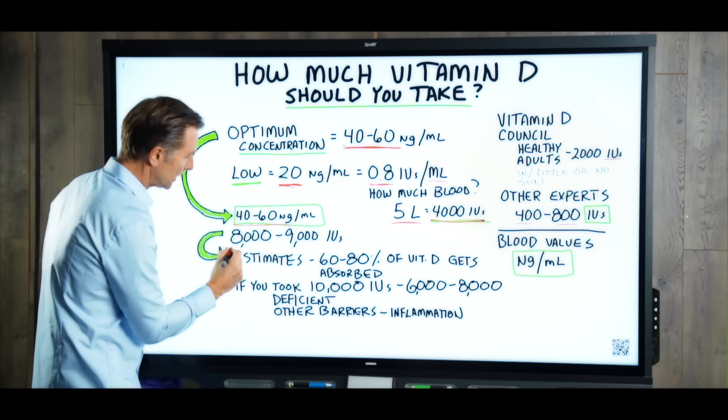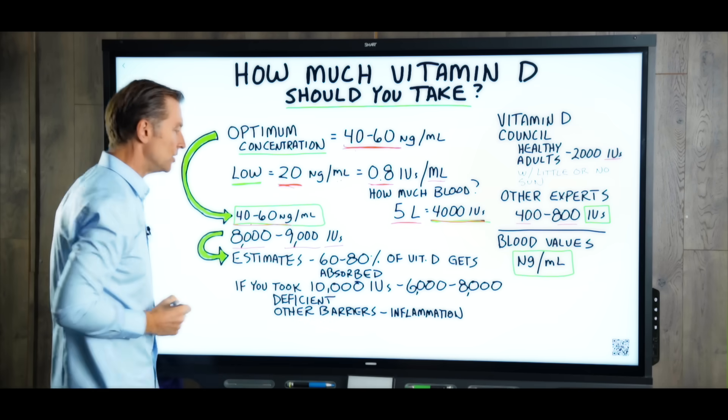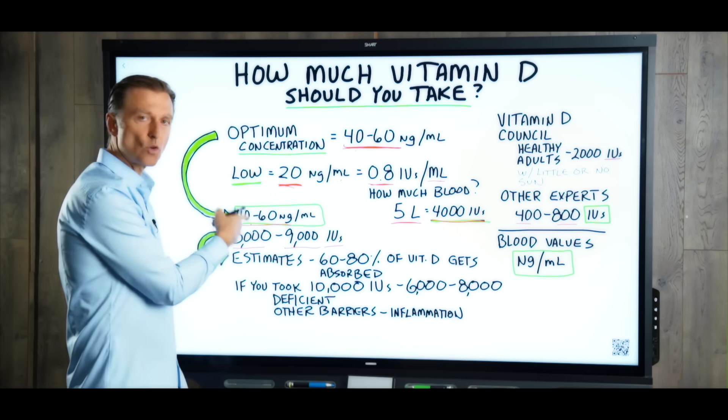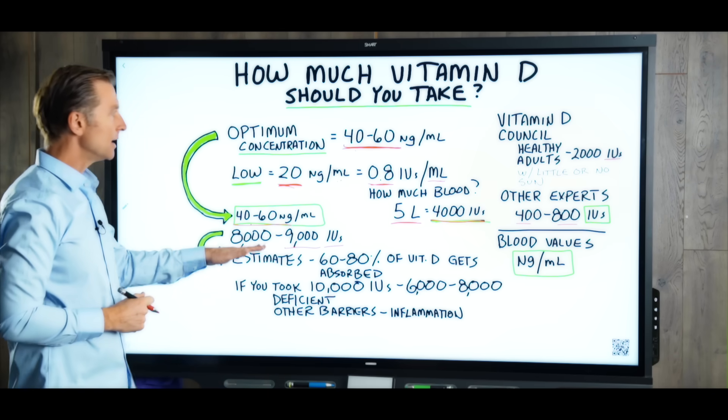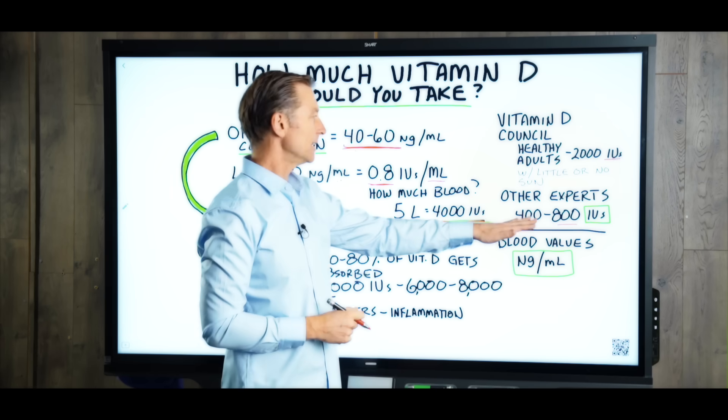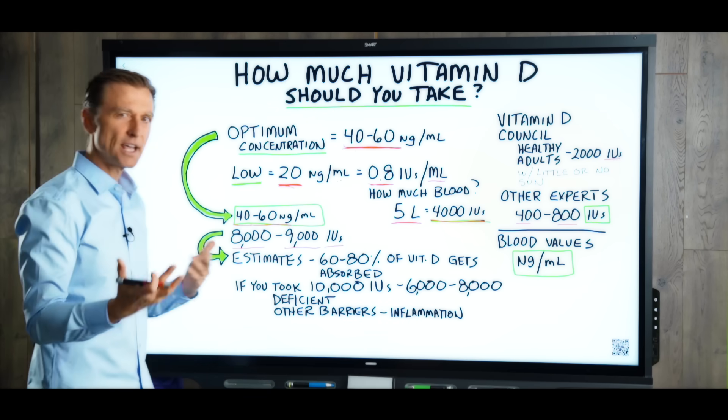Well, if you do the calculations, it's 8,000 to 9,000 IUs. That's what's normal in your blood. So how are we going to get this if we're only recommending this or that? That's what I just don't understand. It doesn't make sense to me.